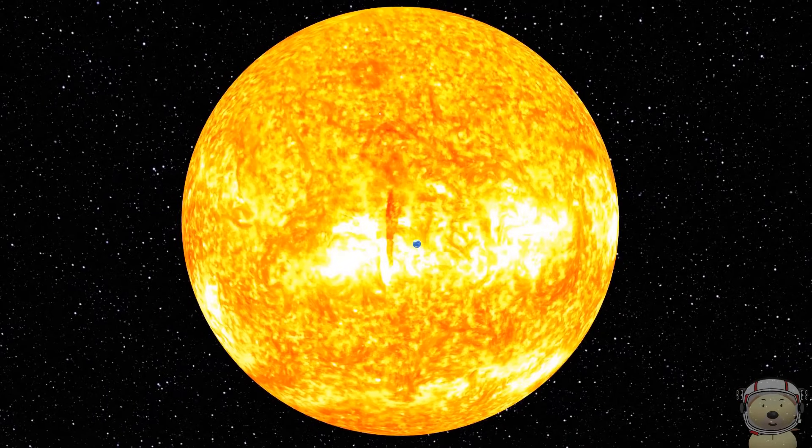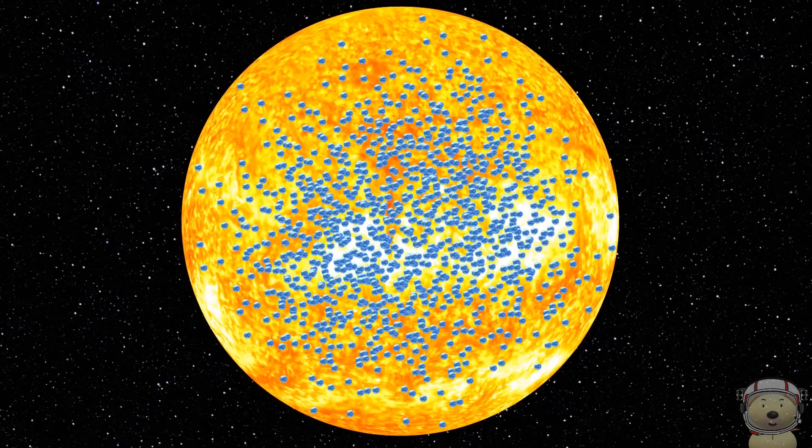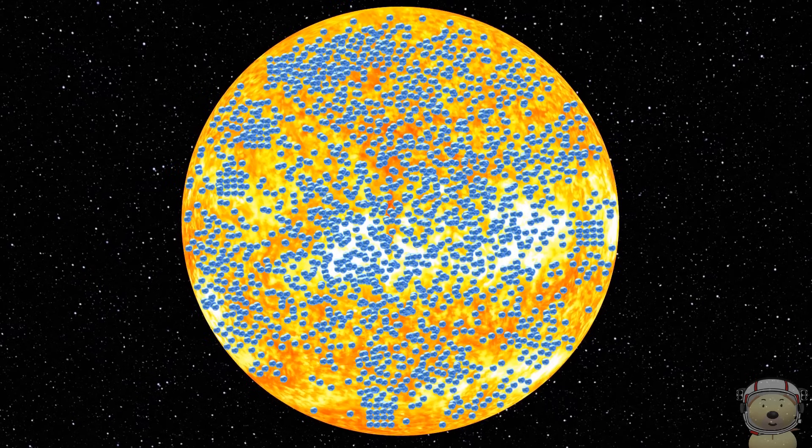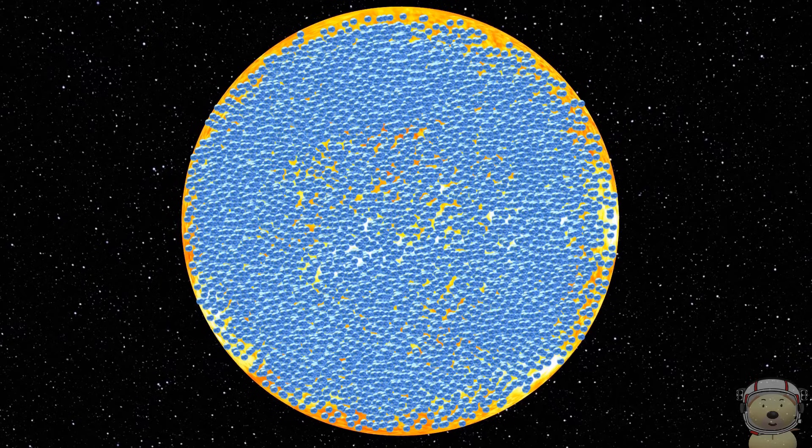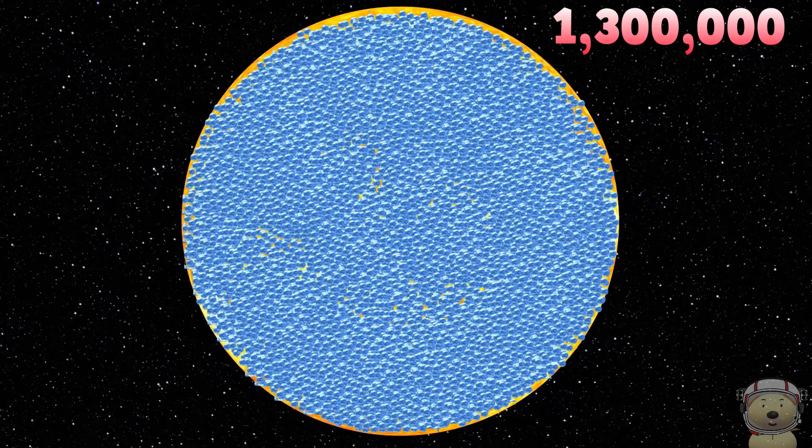Fill the Sun with planet Earth. The Sun could hold around 1,300,000 of planet Earth.